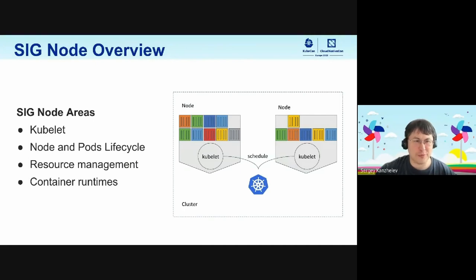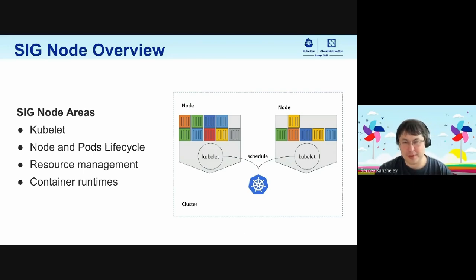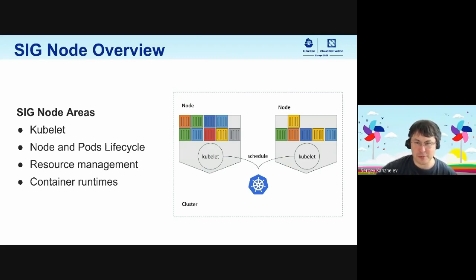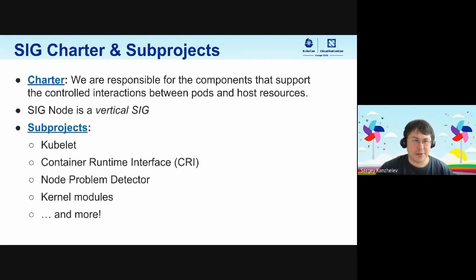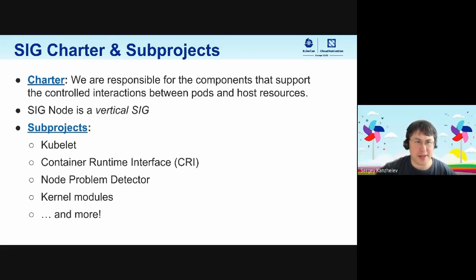SIG Node is responsible for many things happening on Kubernetes nodes. It consists of multiple areas, including Kubelet. It covers node and pod lifecycle — how they are managed and what stages they go through. It also covers resource management, and during today's presentation we'll go deep into resource management specifically. SIG Node also communicates with operating systems through the container runtimes. Our charter is to be responsible for all components that control interaction between pod and host resources. SIG Node is a vertical SIG — we control a specific area of code.